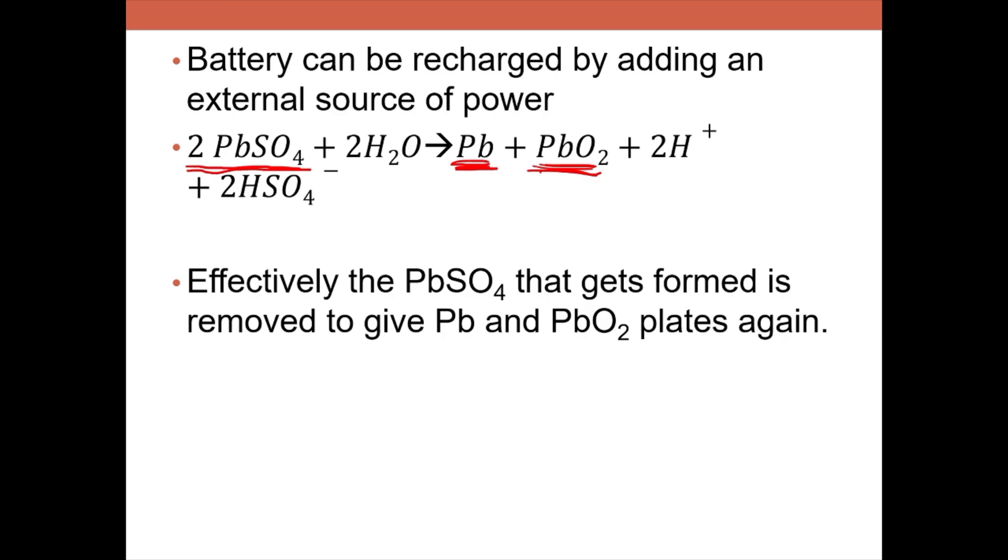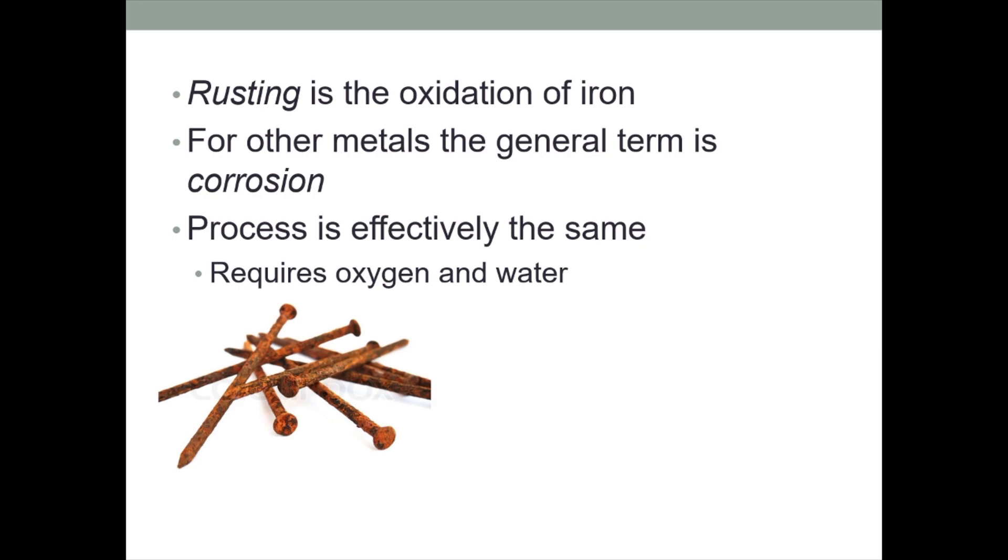Another application of electrochemistry, it's not really an application, but we can use electrochemistry to fight this phenomenon, and that's rusting or corrosion of metals. Rusting is specifically referring to the oxidation of iron or the corrosion of iron. For other metals, we simply just call it corrosion. The process is very similar though, and it requires the presence of oxygen and the presence of water. If you're missing one of these, then corrosion won't occur.